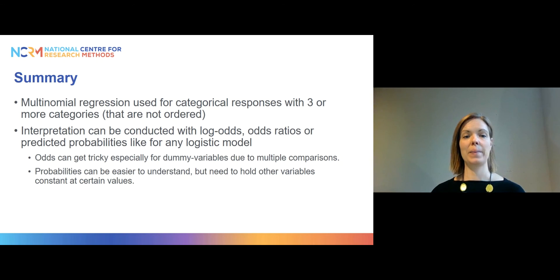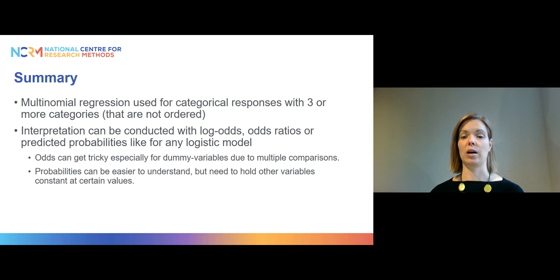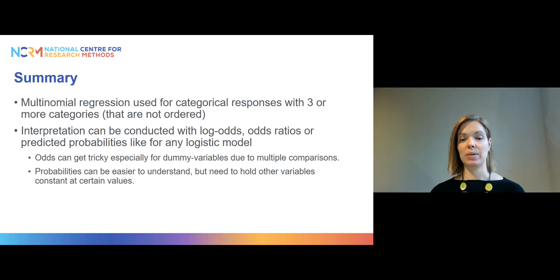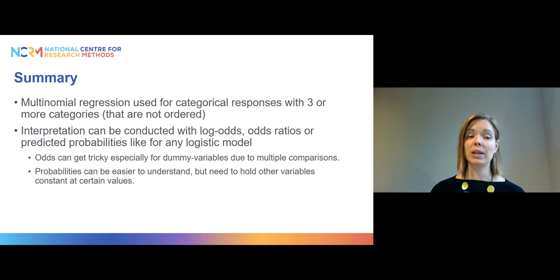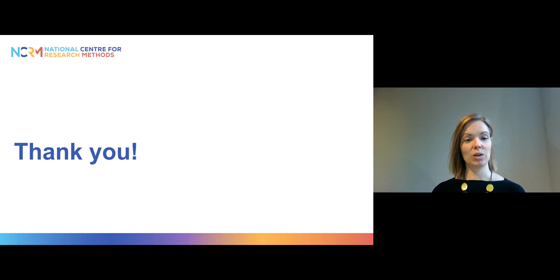To sum up: multinomial regression is a model you can use for categorical responses with three or more categories, and the categories do not have to be ordered. Interpretation can be conducted using log odds, odds ratios, or predicted probabilities, like any other logistic regression model. Log odds are not very intuitive so we don't usually use them. Odds ratios can get a bit tricky, especially for dummy variables, because of the multiple comparisons. So it can be easier to understand predicted probabilities, though you need to decide which values to hold constant for the other variables when making those calculations. Thank you so much.